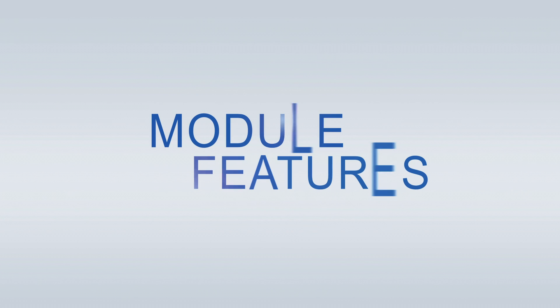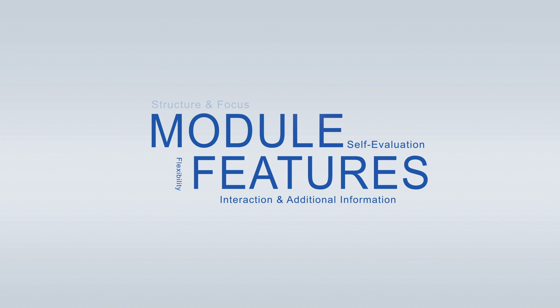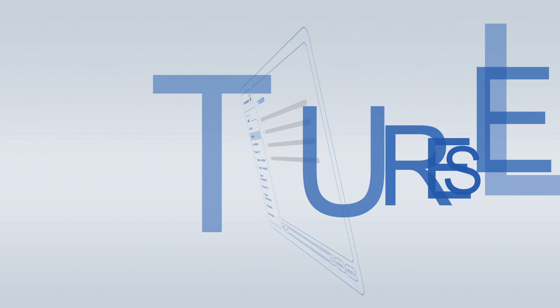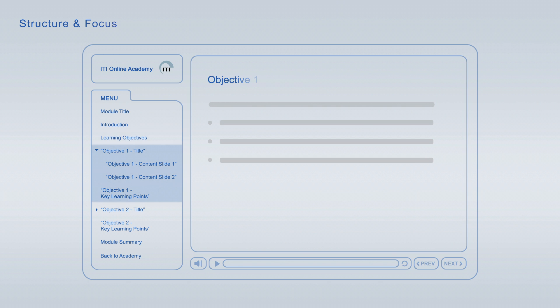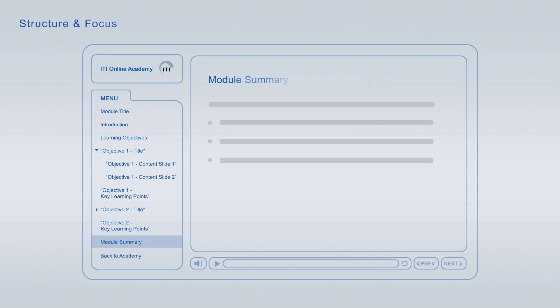ITI Online Academy learning modules offer a wide variety of features to optimize your learning. Every module starts off with an introduction that is followed by the learning objectives, giving you an overview of the main topics and learning goals covered. Each learning objective is discussed in an individual topic chapter that concludes with a list of its key learning points. The summary at the end of each module combines the major key learning points across all learning objectives for final repetition and focus.